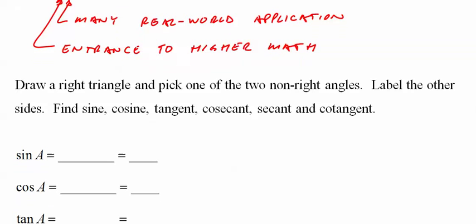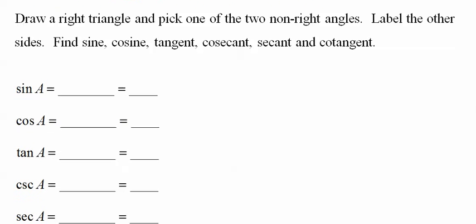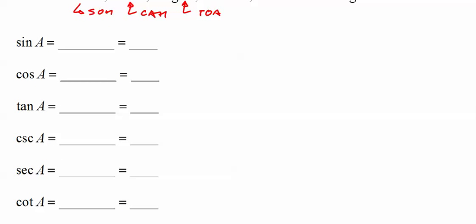The first thing we'll start with is the classic SOHCAHTOA. SOHCAHTOA stands for sine is SOH, cosine is CAH, and tangent is TOA. And this is the magic of trig in that you have a triangle.